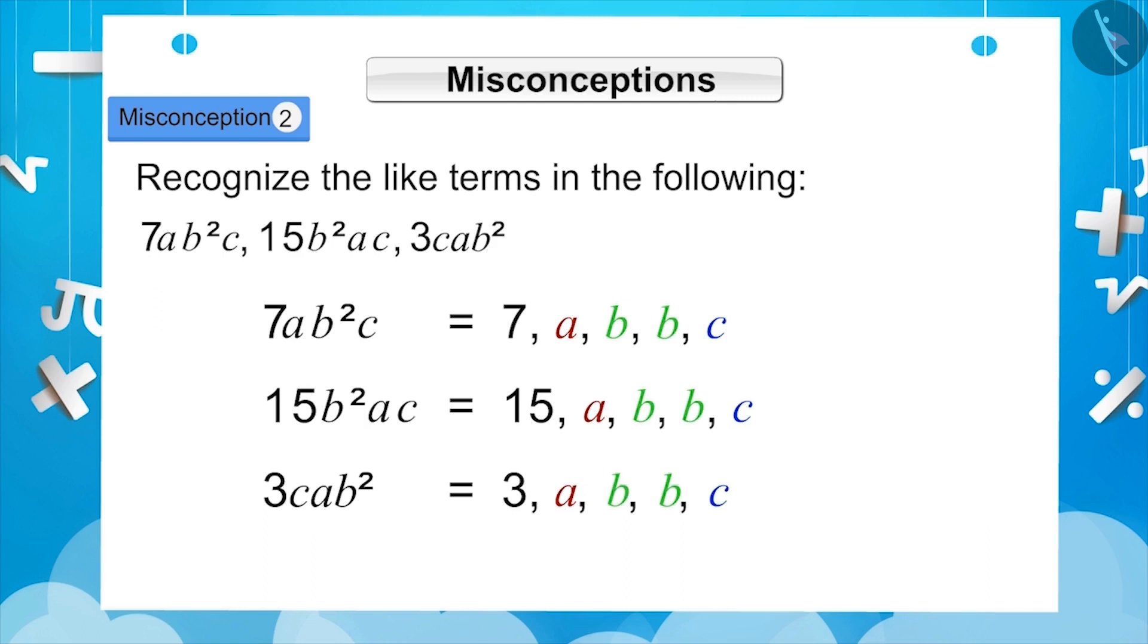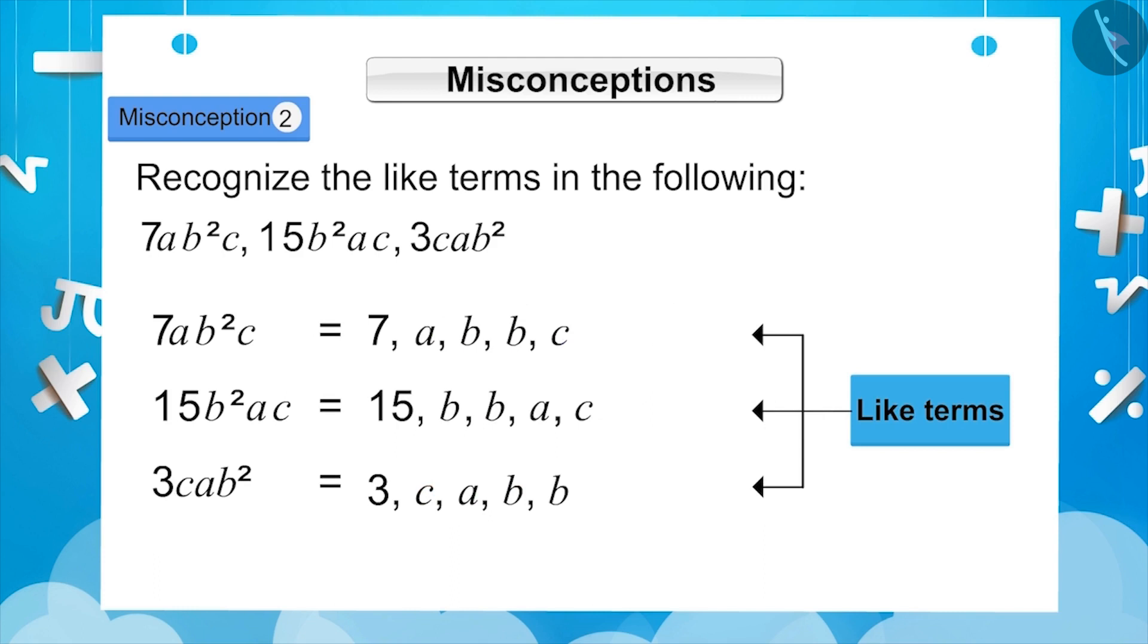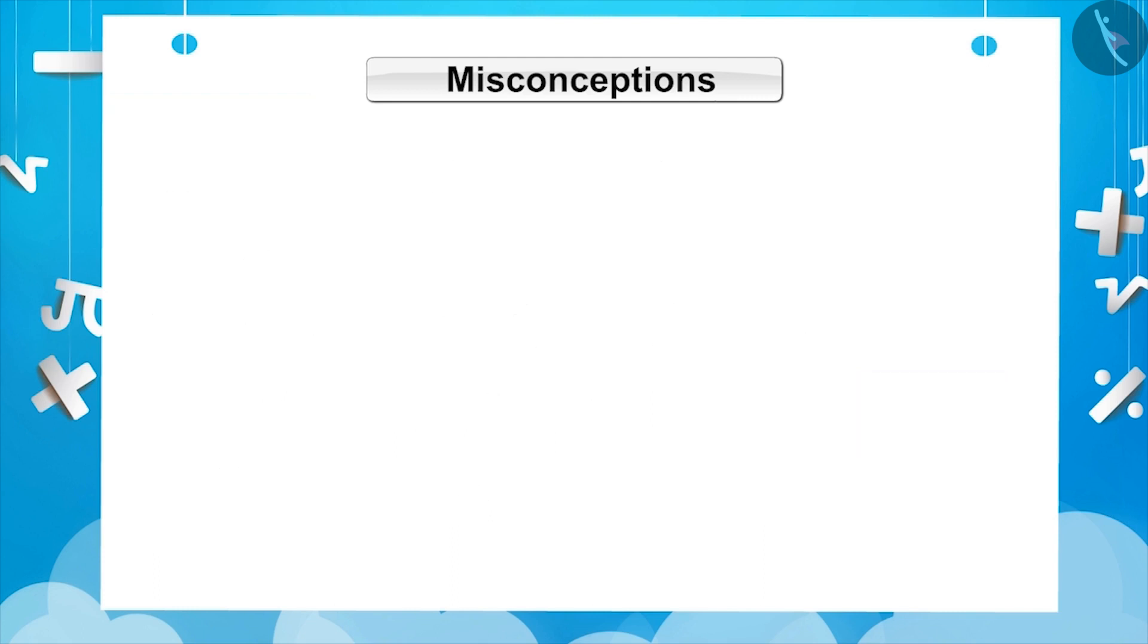As we know, terms with like variables are called like terms. Here, the variables of all three terms are a, b, b, c, which are like or similar. Therefore, they all are like terms. Sometimes children assume that like terms also have variables in the same order.